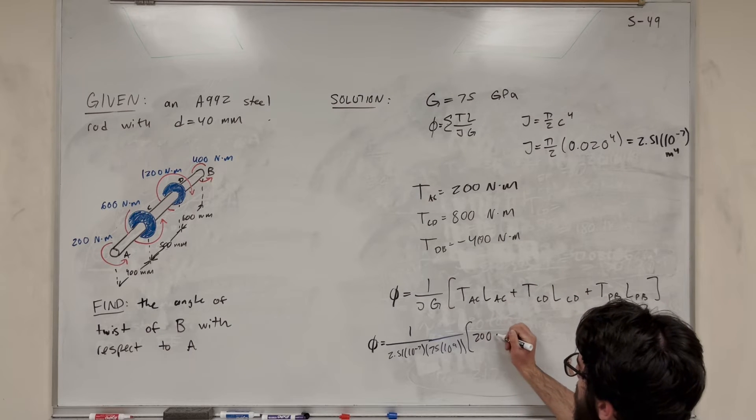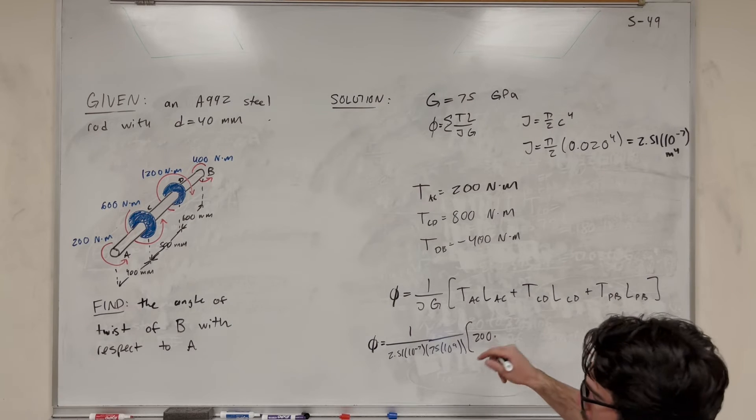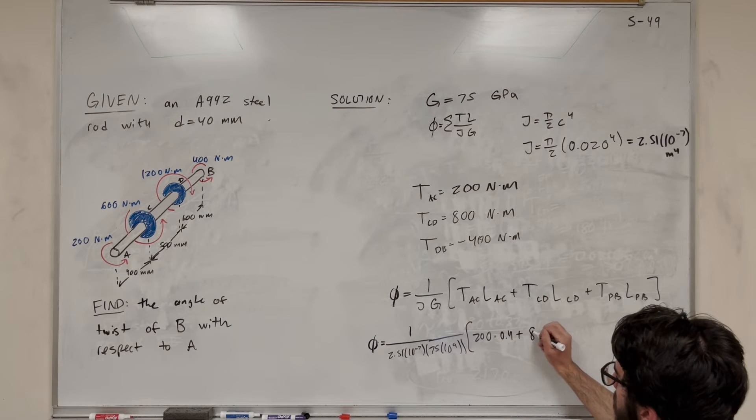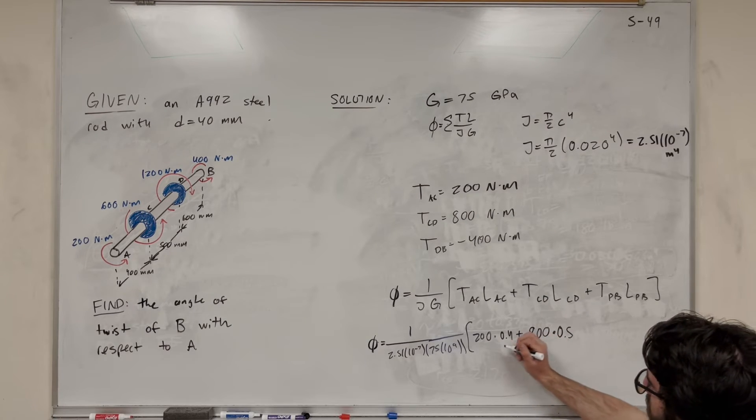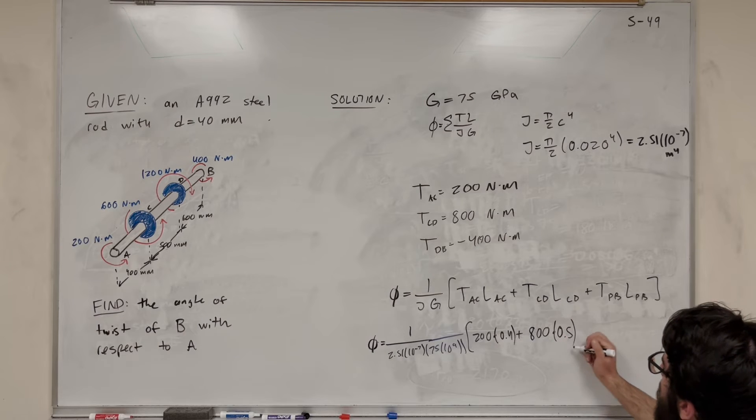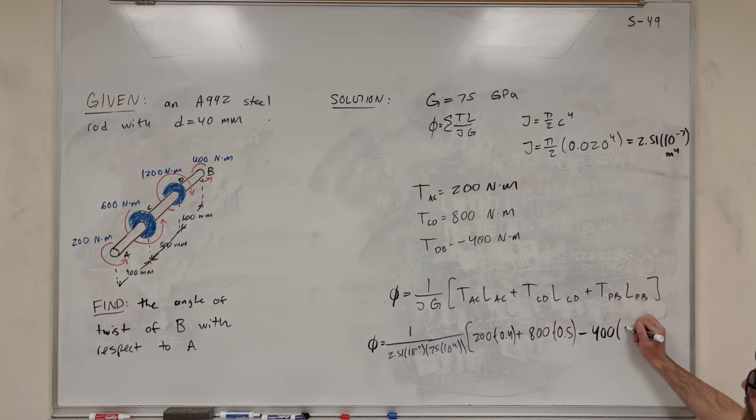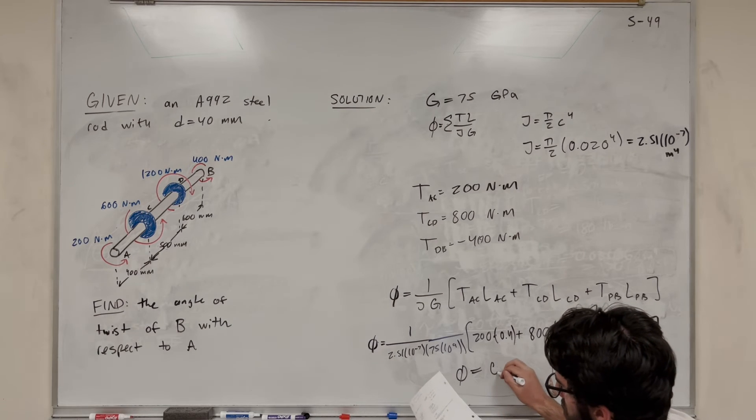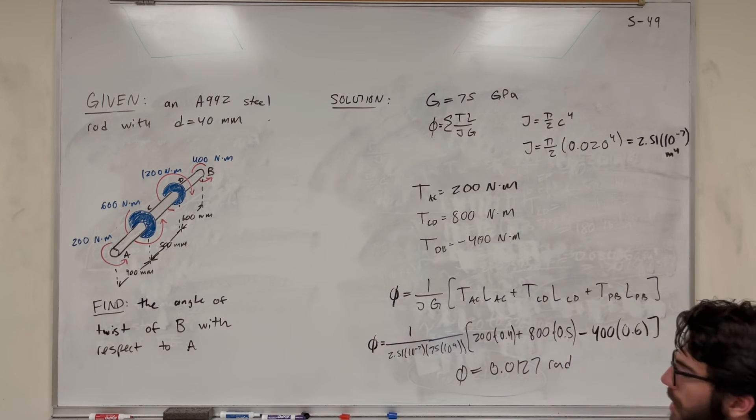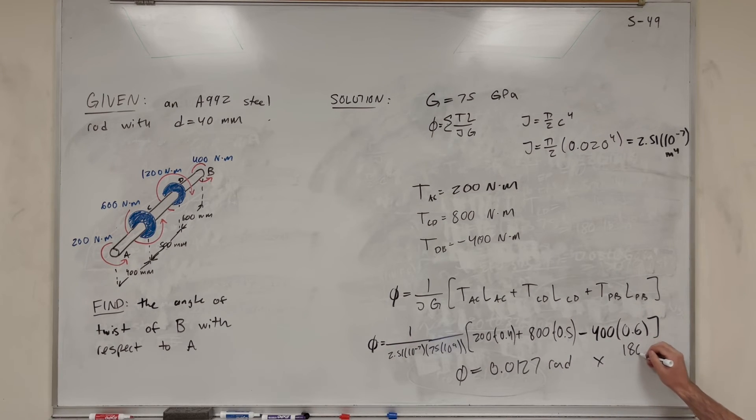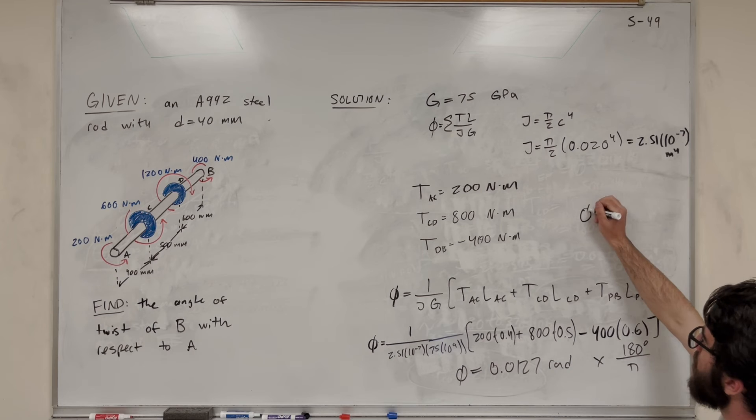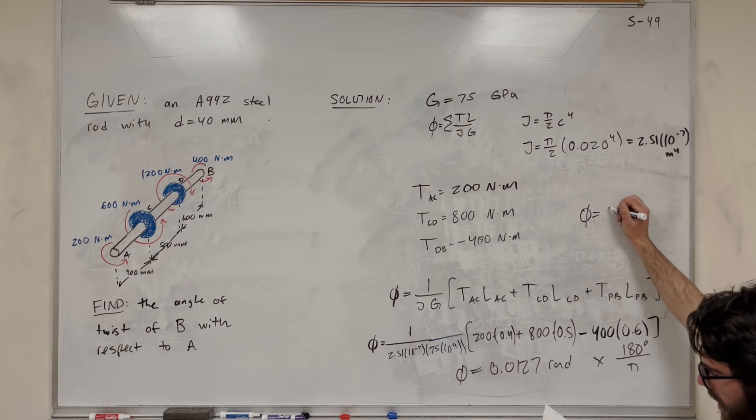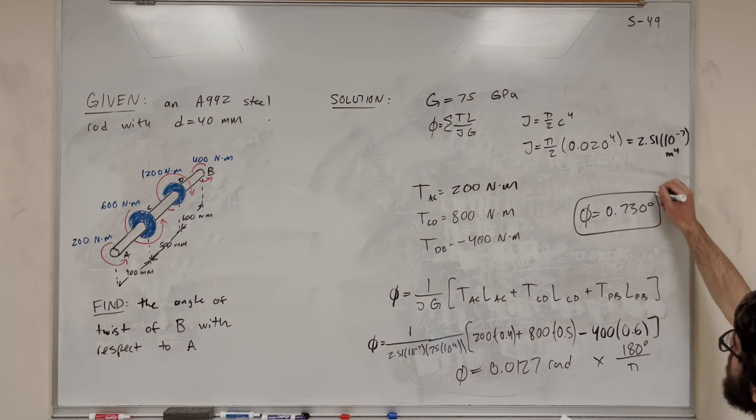Then what do we have, right? So we have this 200 for AC, 200 newton meters times the length in meters. So that's 400 millimeters to 0.4. Add up to the next one, 800 times its length, 0.5. I'll add these. I'll use parentheses, though. That's easier. And then we have to subtract this last one because it's negative, minus 400 times its length, 0.6 meters. Okay, make sure you plug that all in, right? Looks good. You get that the angle of twist in radians, right? It's going to give you an answer in radians. 0.0127 radians. Now, if you want to convert from radians to degrees, all you need to do is multiply it by 180 degrees over pi, right? Because 180 degrees is equal to a pi radian. Solve for this. I'm going to write it up here. This is equal to, I hope I did right, 0.730 degrees. And there you go. That's your final answer.